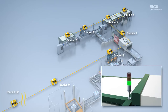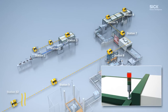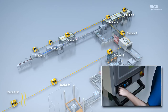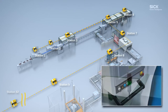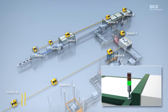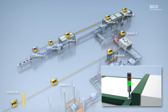An addressless topology facilitates easy addition and removal of machine stations without a new configuration of the complete system. Therefore, FlexiLine offers the flexibility demanded by modern machine concepts.